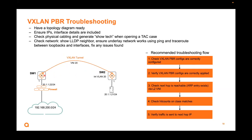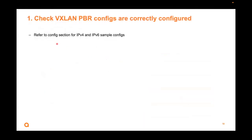Once the VXLAN tunnel is up, then you can check your VXLAN PBR. Check that configs are correctly configured and correctly applied. Check that your next hop is reachable — make sure the ARP entry exists. Check the hit counts to see if any of the traffic hits. Verify that traffic is actually sent to the next hop IP correctly. Refer to the config section for sample configs for IPv4 and IPv6.